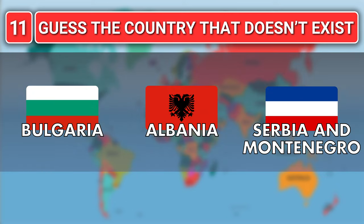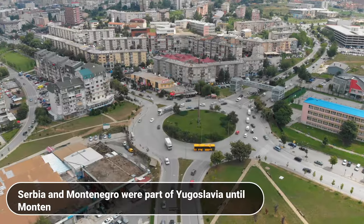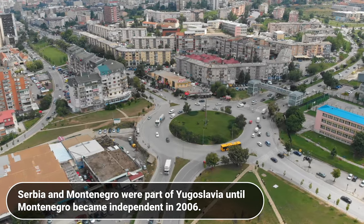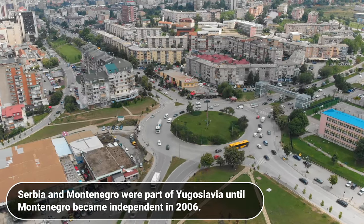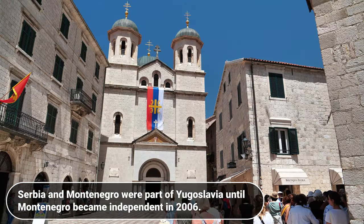Which country does not exist? Bulgaria, Albania or Serbia and Montenegro? It is Serbia and Montenegro. Serbia and Montenegro were part of Yugoslavia until Montenegro became independent in 2006.